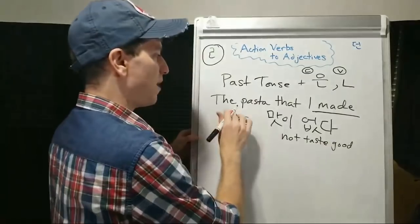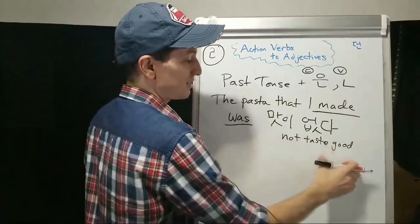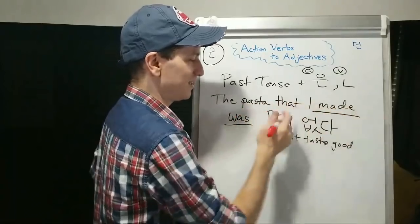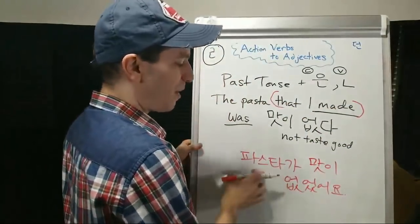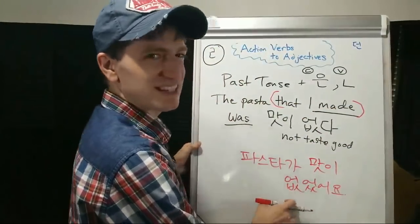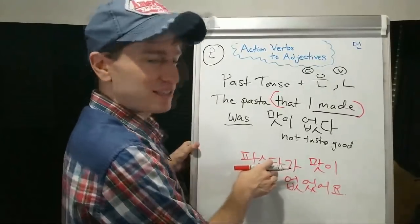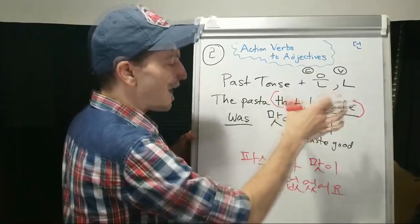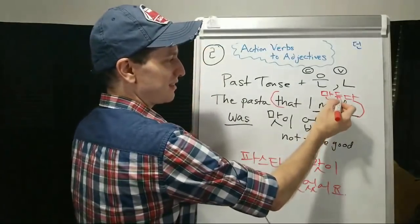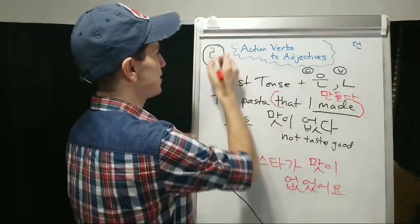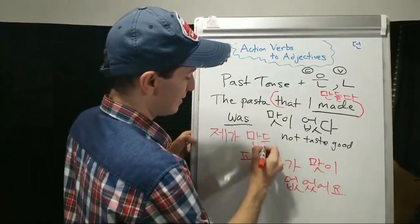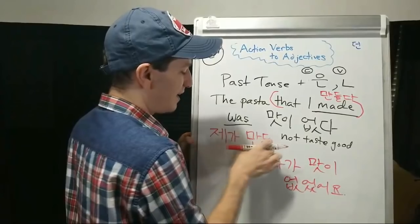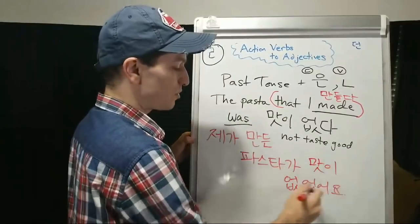I want to say: the pasta that I made did not taste good. What kind of pasta? Pasta that I made. 파스타가 맛이 없었어요 — the pasta was not good. Now let's describe the pasta — 만들다 to make. Notice the verb stem has 리을 in it, so we remove it. 제가 만든 파스타 — the pasta that I made. So: 제가 만든 파스타가 맛이 없었어요 — the pasta that I made did not taste good.